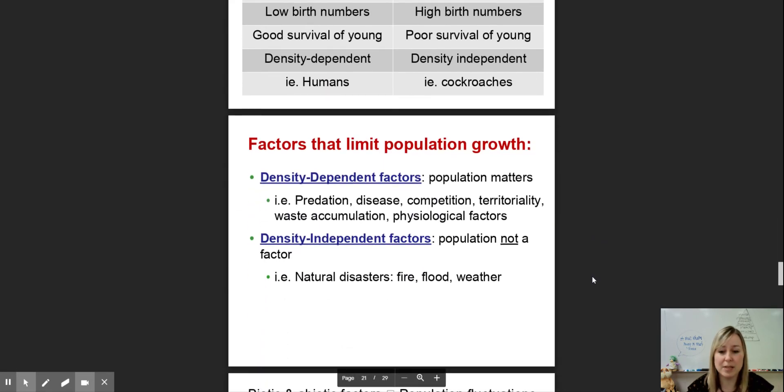The factors that limit population growth—density dependent means it depends on how many organisms are actually there. Population matters. This is going to be diseases and competition for resources, territory, access to mates, waste accumulation and subsequent disease, and predation. Whenever one population is high, if the prey is high, then the predator is getting a lot of food. That's all density dependent.